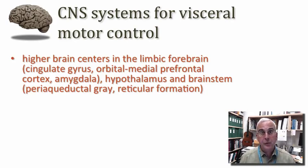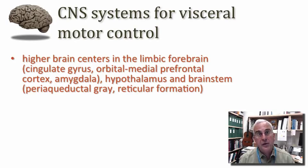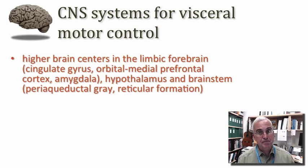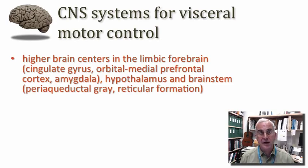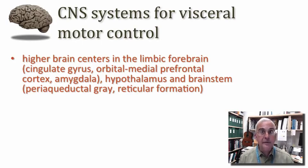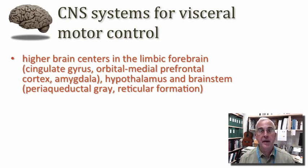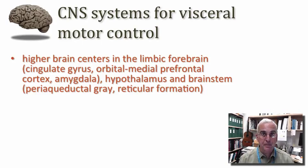With respect to visceral motor control, the relevant aspects of the limbic forebrain are the cingulate gyrus, the orbital and medial division of the prefrontal cortex, and the amygdala. These structures are telencephalic. They integrate a tremendous amount of information coming from just about every source one can think of, and the result of this integration is some sort of governance of the output of our visceral motor system, among other possible consequences of integration in the limbic forebrain.